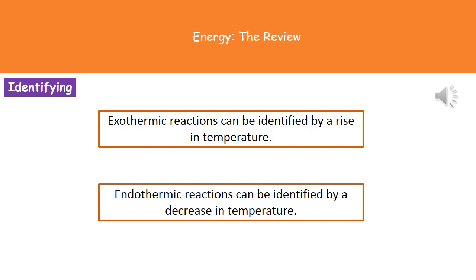The one they're going to ask you about on your exam paper is going to be measurable because it's going to have a change in temperature. If we're talking about an exothermic reaction, then that will be identified by a rise in temperature. If we're looking at an endothermic reaction, then that will be a decrease in the temperature.